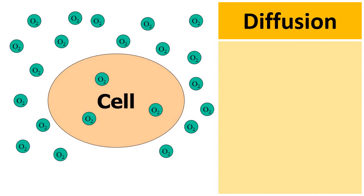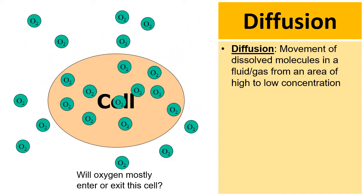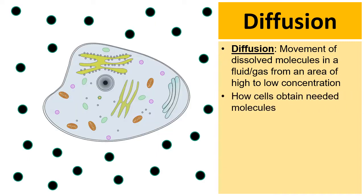Diffusion is the movement of dissolved molecules in a fluid or in a gas from an area of high to low concentration. Here's a cell with some oxygen in it and around it. Most of the oxygen is going to enter from a high concentration to an area of lower concentration — some might leave, but the vast majority will enter until there's equilibrium.